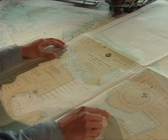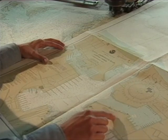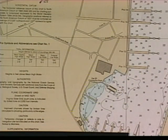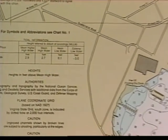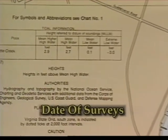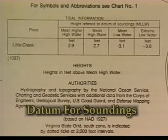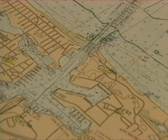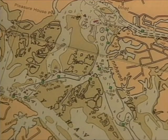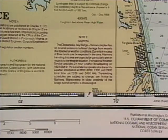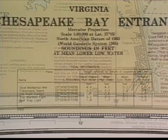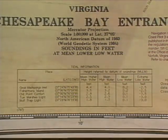The title block information is placed where it does not interfere with other information. It will include information about title, date of surveys, and datum for soundings. Elsewhere on the chart, you will find other valuable printed information, normally placed in the land areas, including notes of caution, title information, and references to anchorage areas.